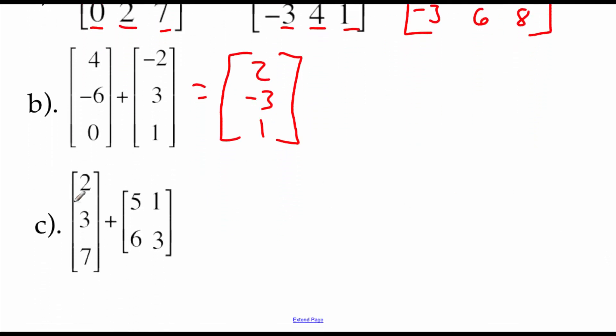Now if we look at this last example, here we've got three rows, one column. Here we've got a 2 by 2 matrix. These ones do not match up. So this one is undefined. We are unable to add those two matrices together since they have different orders.